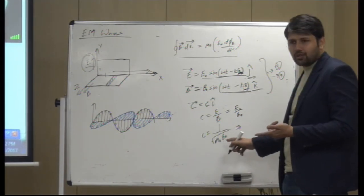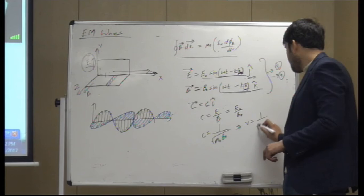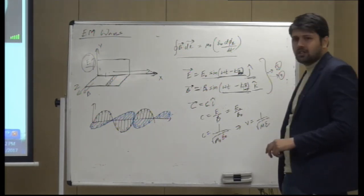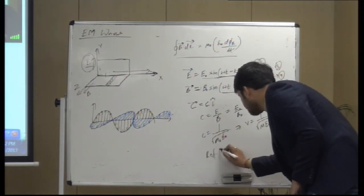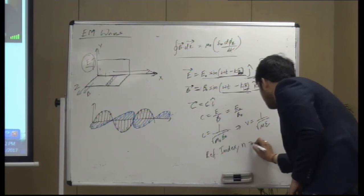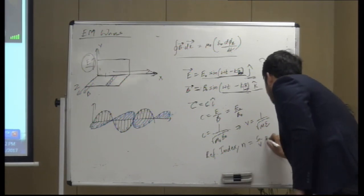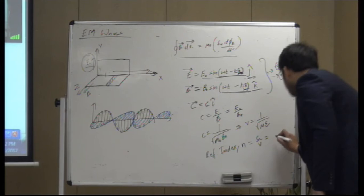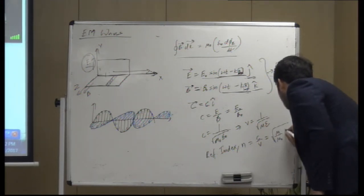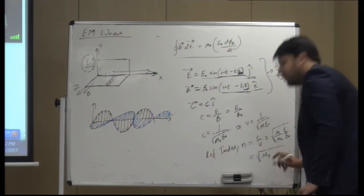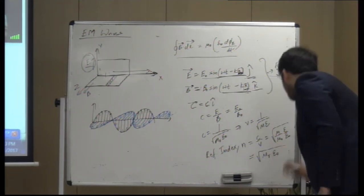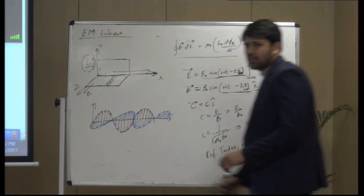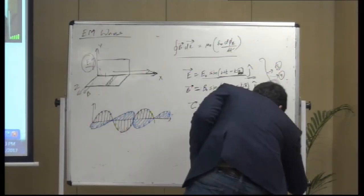This is for vacuum. For a medium, this would become 1 by sqrt(mu * epsilon). So if I call the refractive index N, it is C by V_E. By comparison of speeds, it becomes sqrt(mu by mu naught) times sqrt(epsilon by epsilon naught), or sqrt(mu_R * epsilon_R) — relative permeability and relative permittivity.